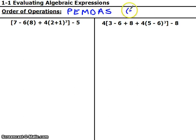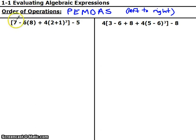You always want to evaluate things from left to right when possible. Remember what these stand for: P is parentheses. Parentheses can be more than just parentheses — like in this first problem, we have these brackets. Those are the same thing as parentheses, so we treat them on the same level. It's really any grouping symbol. Some people have changed this to GEMDAS for grouping symbols, but parentheses and grouping symbols are the same thing.